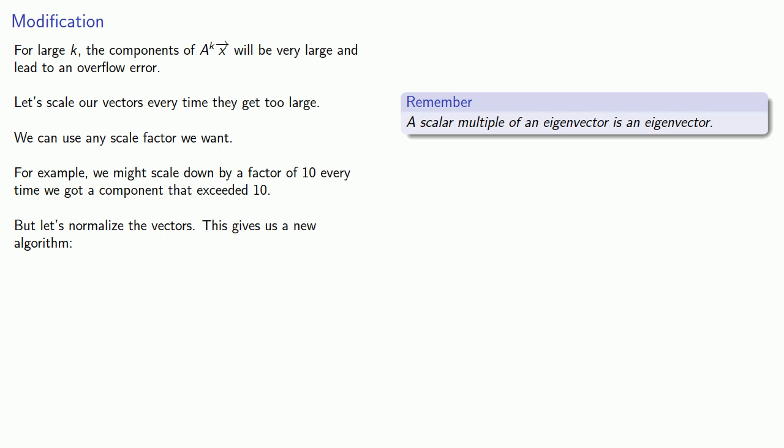This gives us a new algorithm. We'll find y, which is A applied to x_k. And then we'll let x_(k+1) be the normalized version of our vector y.